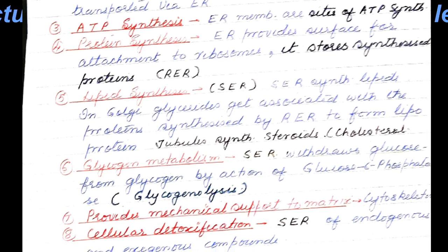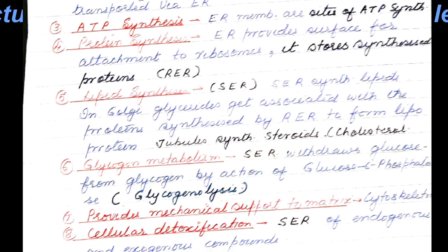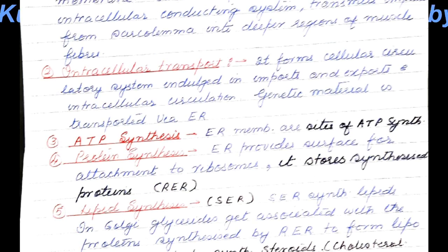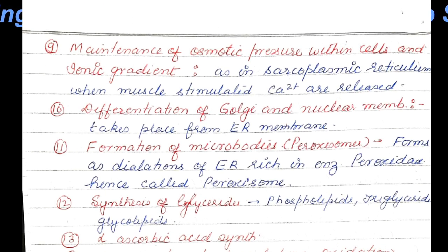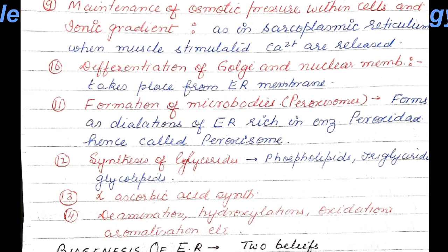Glycogen metabolism or glycogenolysis is performed by smooth endoplasmic reticulum. Cellular detoxification is also performed by smooth ER. Mechanical support is provided by ER to the cellular matrix. Other important functions include creation of osmotic pressure and ionic gradients within cells. ER is also the seat of differentiation of Golgi and nuclear membrane, and peroxisomes also differentiate from endoplasmic reticulum.